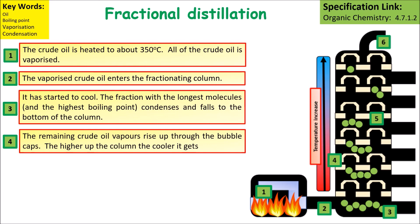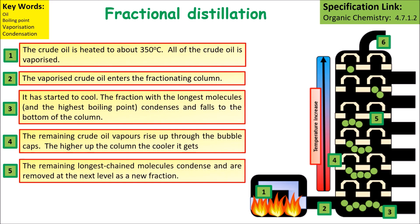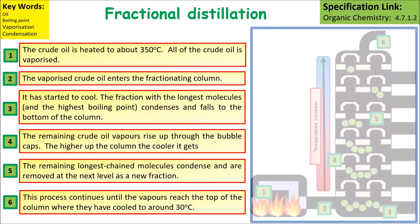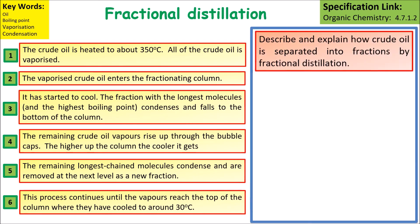The fraction with the longest molecules condenses and falls to the bottom of the column. The remaining crude oil vapor rises up through bubble caps. The higher up the column, the cooler it gets — the remaining longest chain molecules condense and are removed as a new fraction at the next level. This process continues until all of the vapor reaches the top of the column, where it is cooled down to around 30 degrees.